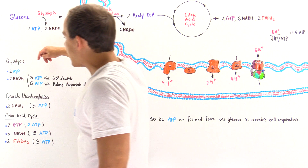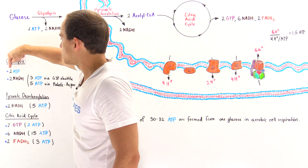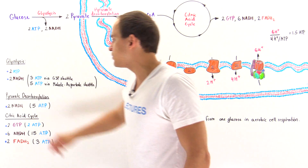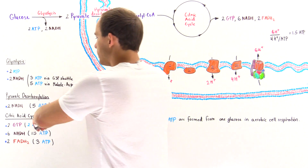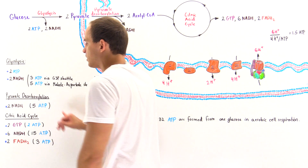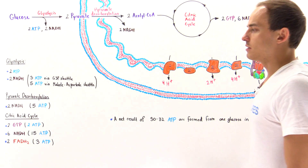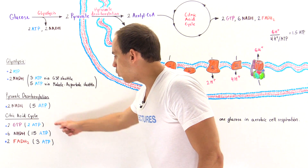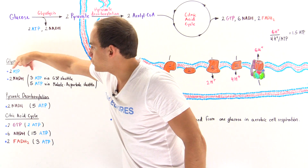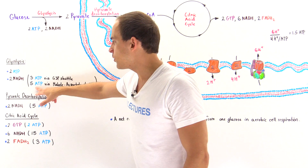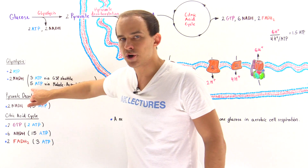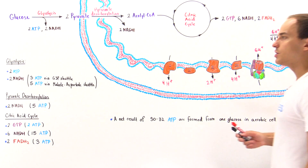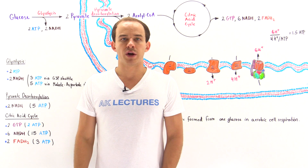To summarize: glycolysis produces 5 to 7 ATP (2 direct ATP plus 3 to 5 from NADH oxidation). Pyruvate decarboxylation produces 5 ATP. The citric acid cycle produces 2 + 15 + 3 = 20 ATP. Adding these together: 20 + 5 + 5 = 30, plus 2 to 7 from glycolysis gives a net total of 30 to 32 ATP molecules formed from one glucose molecule metabolized in aerobic cell respiration.